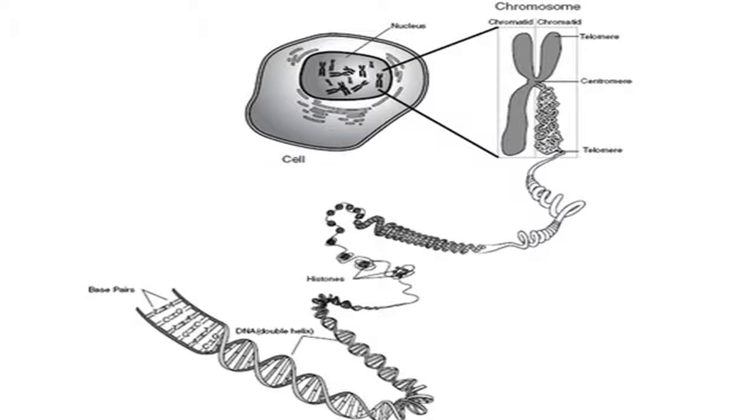Right, you can unpick a chromosome into this thread-like structure and that's DNA. And DNA is made of base pairs with a phosphate backbone to it, but you don't need to know that.